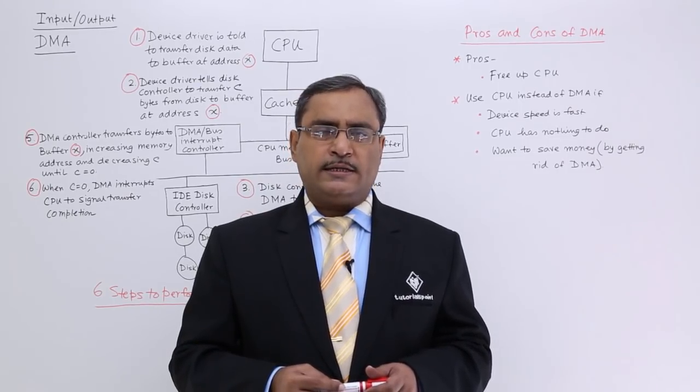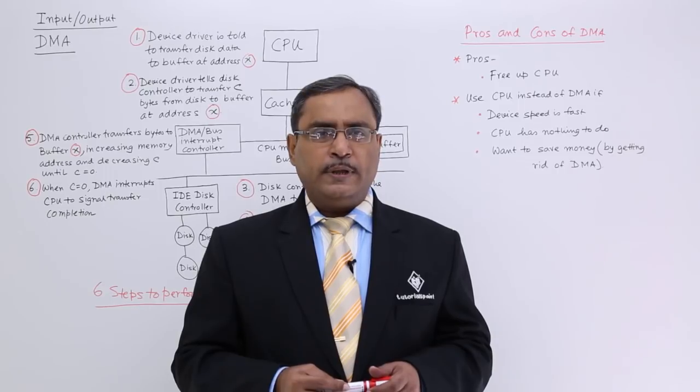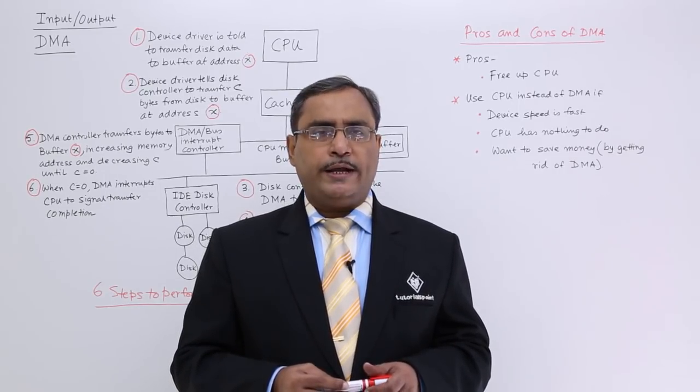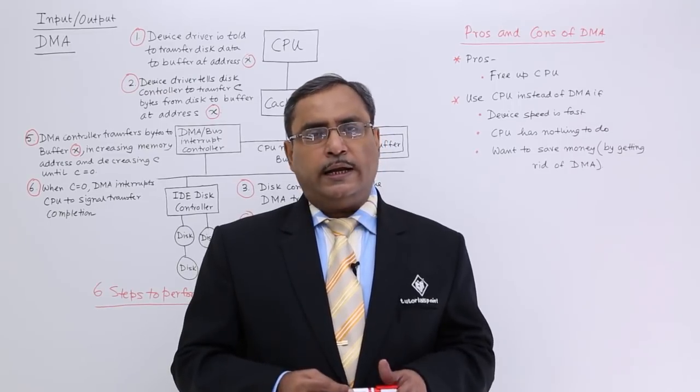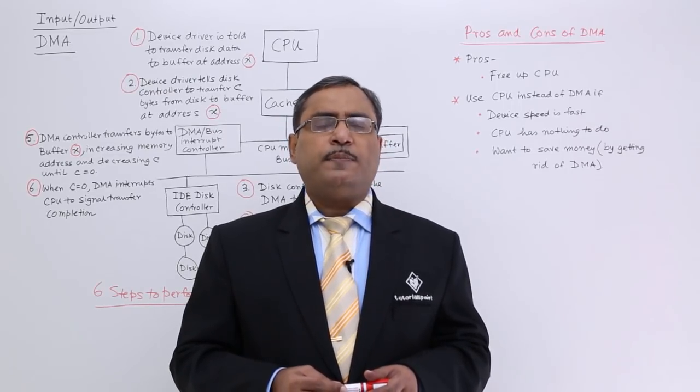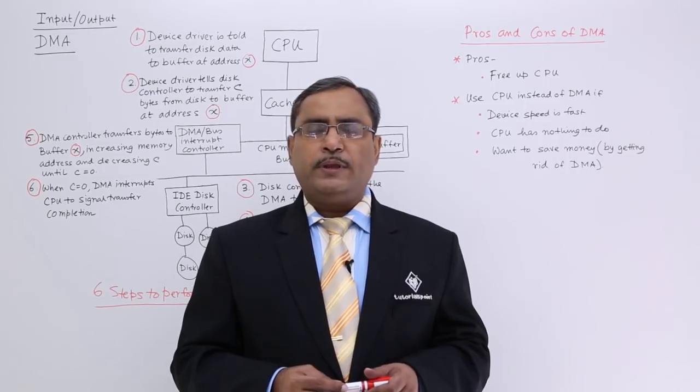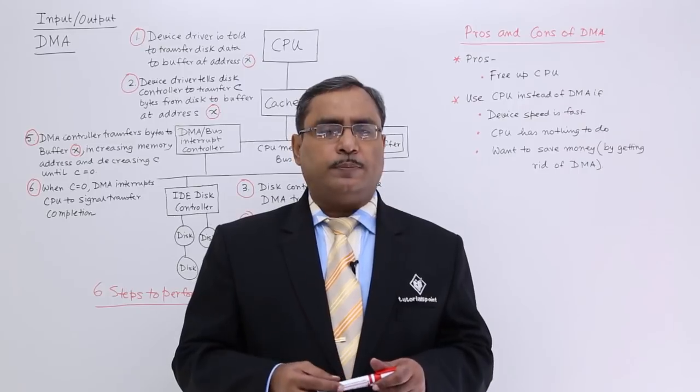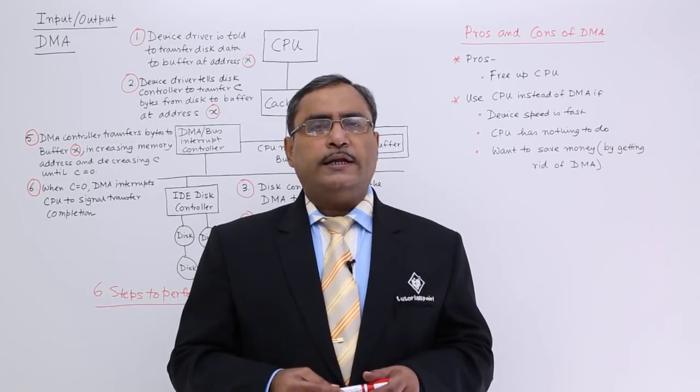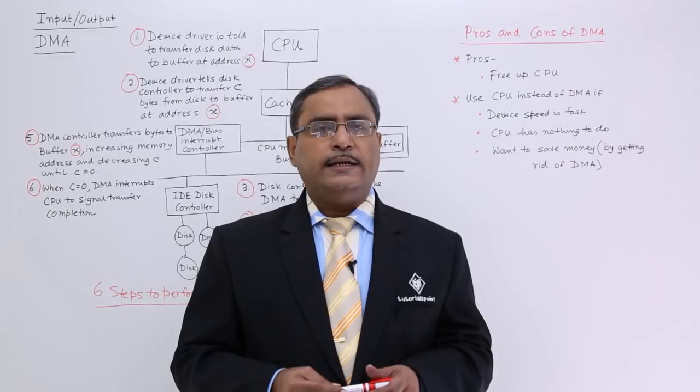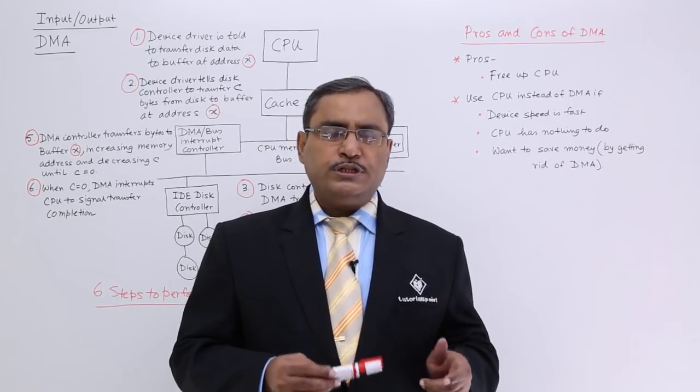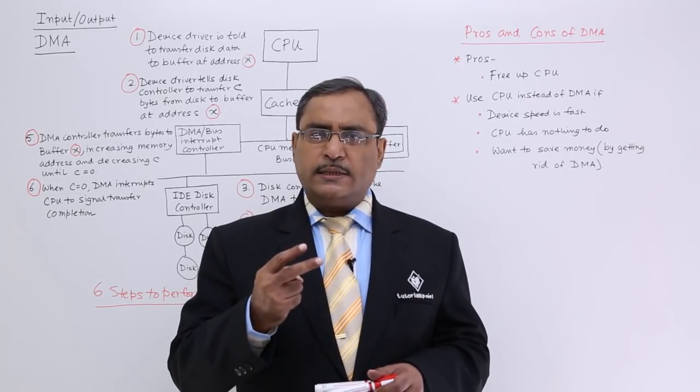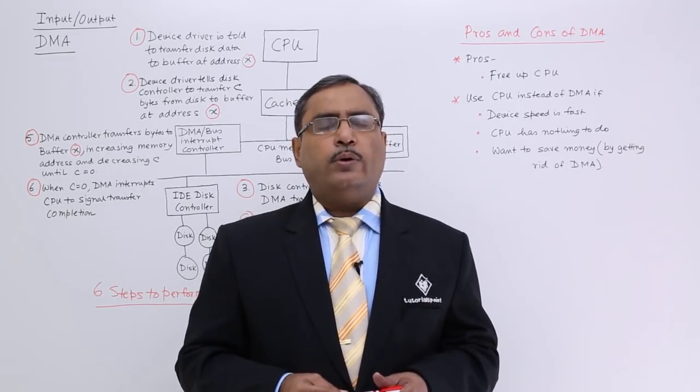DMA controller gets four parameters. Parameter number 1 is the source address from where the data is to be read. Parameter number 2 obviously the target address, where this particular data is to be dumped. Parameter number 3 is byte count, how many bytes of data. Parameter number 4 whether it is read or write so that it can decide from which direction to which direction the data is to be transferred. Two addresses, byte count, whether read or write.